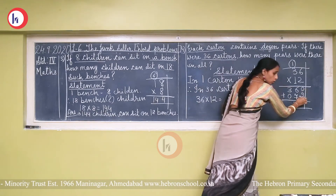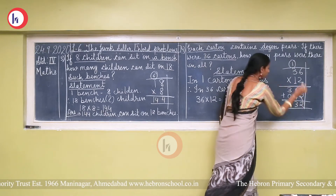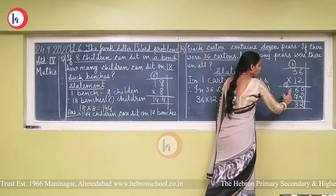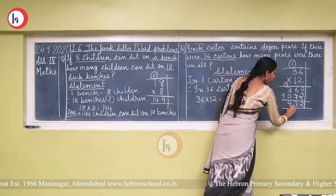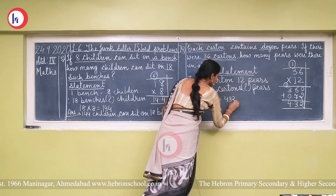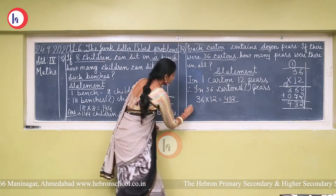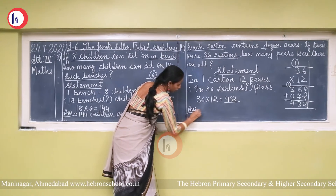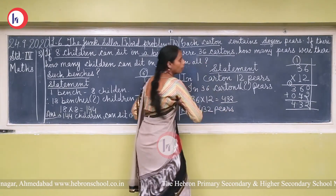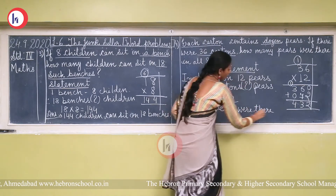Adding the partial products: 360 + 72 = 432. The answer is four hundred and thirty-two pairs. Answer: 432 pairs were there in all.